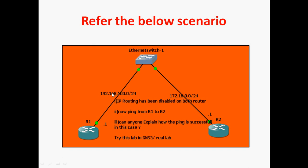So this is my question. I am using two Cisco routers and one Layer 2 switch. The Layer 2 switch is just plug and play. R1 router connects to the Layer 2 switch using the 192.168.100.0/24 network, and R2 router connects to the Layer 2 switch using the 172.16.0.0/24 network. IP routing has been disabled on both R1 and R2 routers. Now, ping from R1 router to R2 router — can anyone explain how the ping is successful in this case?